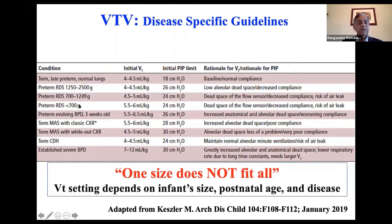For really tiny babies, less than 700 grams, the initial tidal volume could be as high as 6 mL per kilo. For preterm babies with BPD, you have to use a high tidal volume of 6.5. For term meconium aspiration, 5.5 to 6. For meconium aspiration with a complete whiteout chest x-ray — babies that look like RDS or ARDS — use a small tidal volume but allow higher pressure.